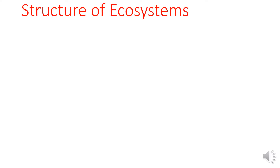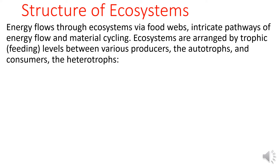Structure of Ecosystems. Energy flows through ecosystems via food webs, which are intricate pathways of energy flow and materials cycling. Ecosystems are arranged by trophic levels between various producers, the autotrophs, and consumers.